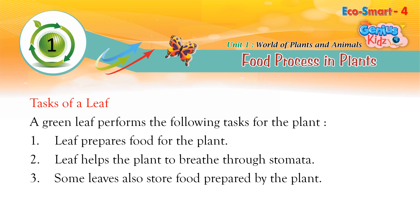A green leaf performs the following tasks for the plant: 1. The leaf prepares food for the plant. 2. The leaf helps the plant to breathe through stomata. 3. Some leaves also store food prepared by the plant.